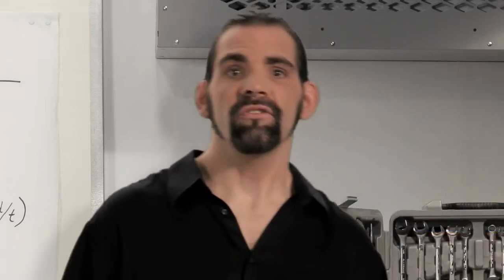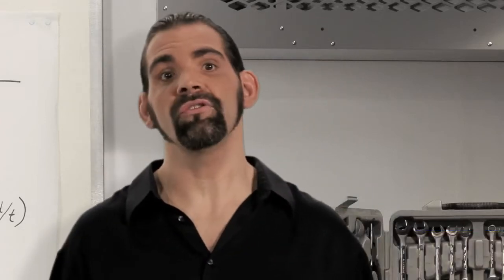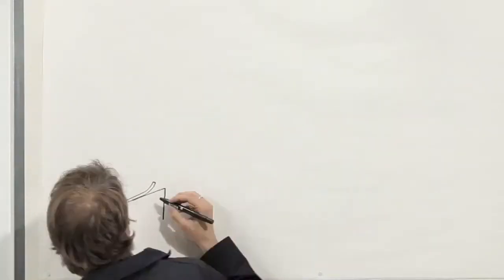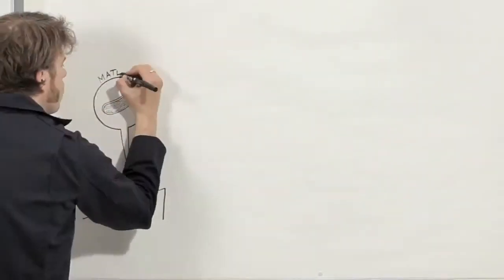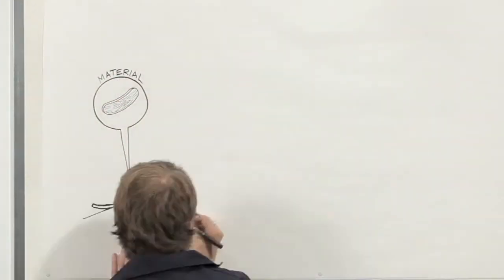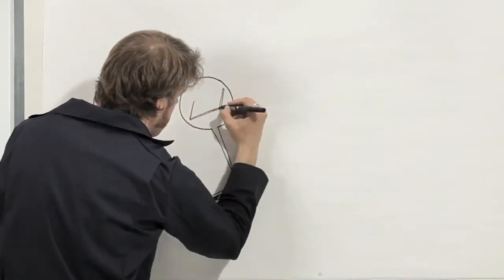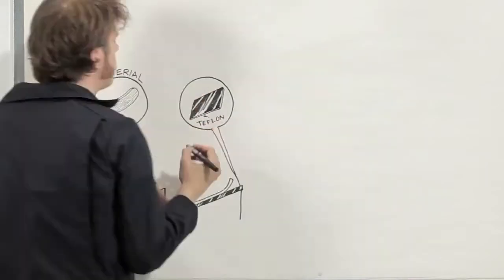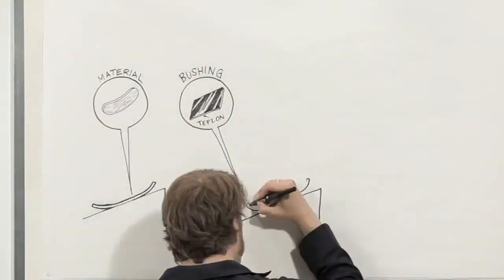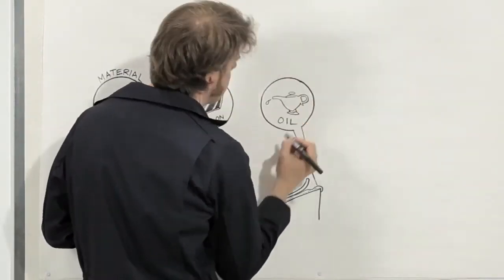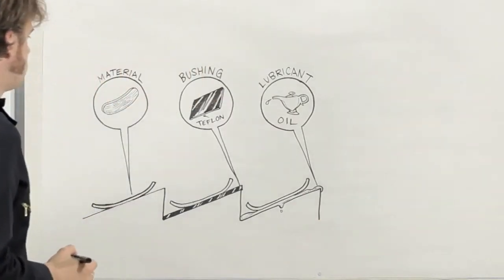One way is to reduce surface roughness by choosing smoother surfaces. Or we can use materials that slide well against each other. If you can't change the parts materials, you can add a layer of different material between moving parts to reduce friction. These are called bushings. You can also use a fluid lubricant like oil. This replaces sliding friction with much smaller fluid drag. Liquid isn't the only lubricant. Air or even a powder like graphite can work.